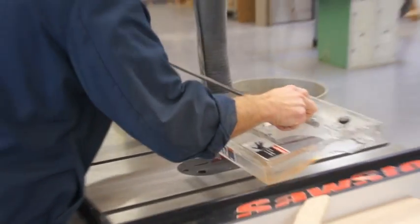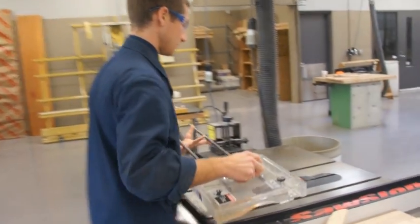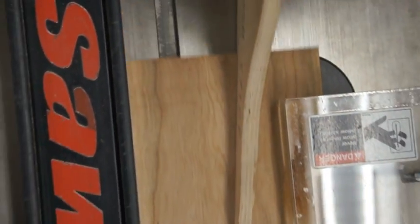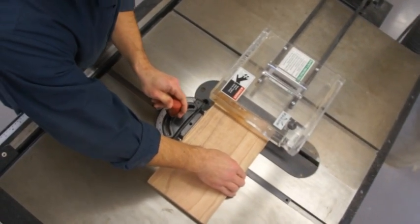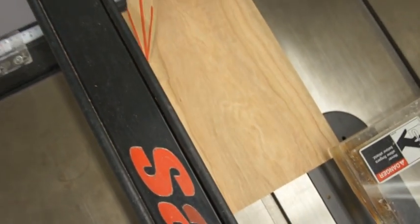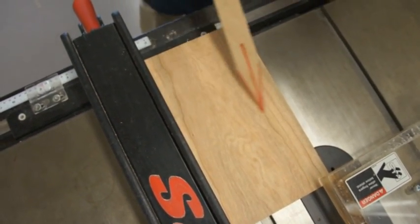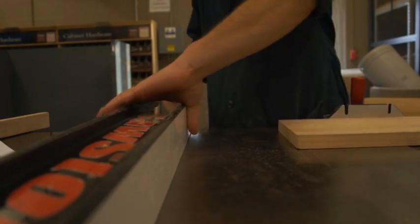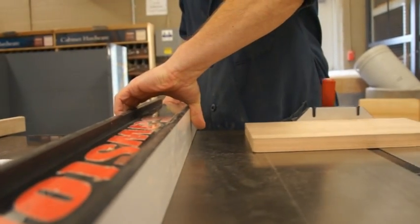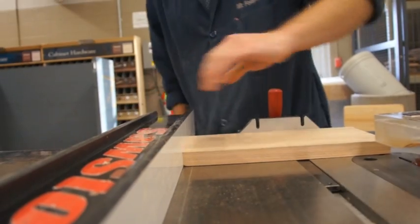The blade guard on the table saw should never be removed unless approved by the instructor. Cutting with the grain is called ripping. Cutting across the grain is called cross cutting. You can only cut using the fence if the length of the board along the fence is greater than the width of the board side to side. It is never okay to use the miter gauge and rip fence together in the same operation.